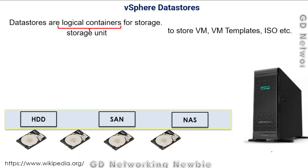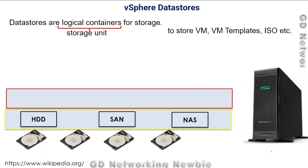Once we have this storage, we need some file system. For example, in Windows-based machines we have the NTFS file system. In the same way, we need a file system here — a file system controls how data is saved on that storage and how data is retrieved from it. In this case, we can have VMFS, the VMware Virtual Machine File System, or we can also have Network File System (NFS), which will be discussed in some other videos.